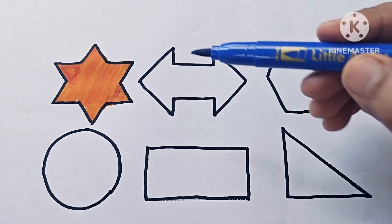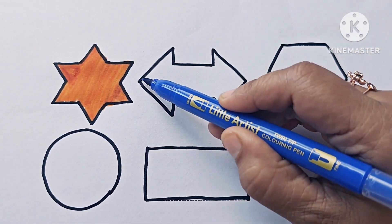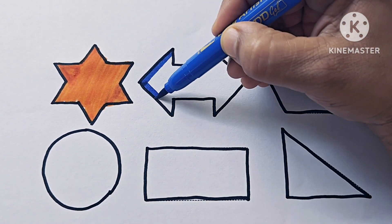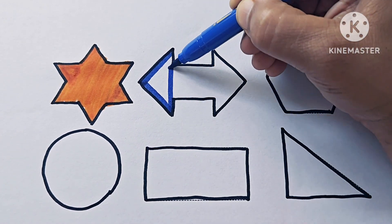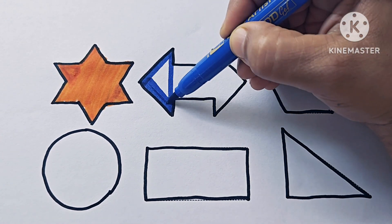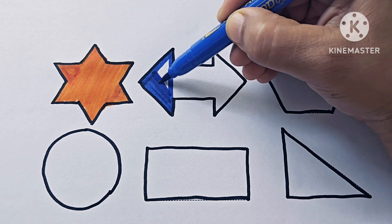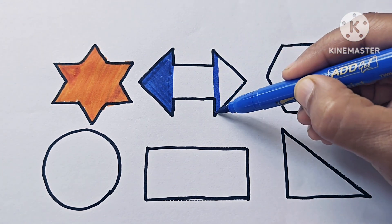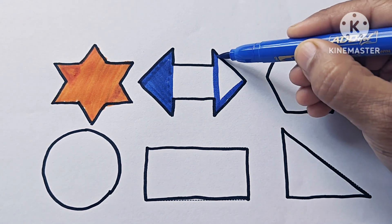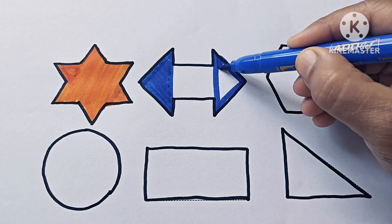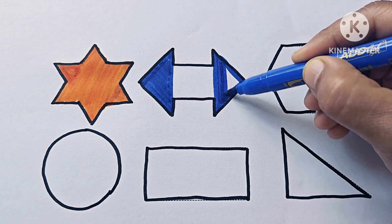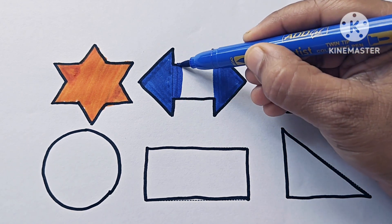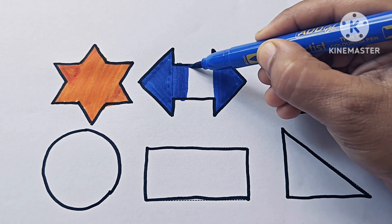Blue color. This is a left-right arrow. It is a symbol. Its direction is left and right. Left-right arrow — this is a symbol.